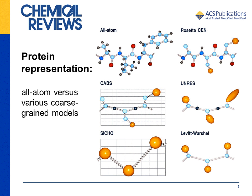Coarse-grained protein models can assume various levels of reduced protein chain representation. This slide shows all-atom representation of a tripeptide and the corresponding coarse-grained models, including Rosetta Centroid Mode, CAPS, ANRES, CYCO, and the Levine-Warsher model. United side-chain atoms are colored in orange. Pseudobonds of fluctuating length are shown as springs, and lattice models are shown on the underlying lattice. The protein chain could be represented by all heavy atoms or by one or two united atoms per residue, typically replacing the side-chain.